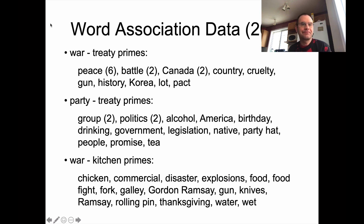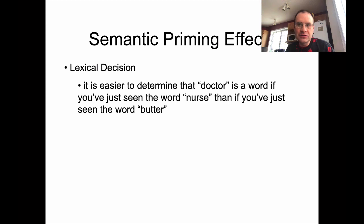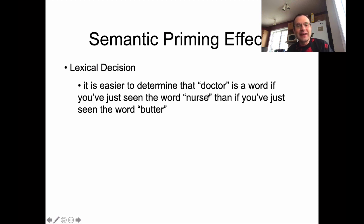Semantic priming can be studied in the lab using a lexical decision task. I plop a sequence of letters in front of you and you have to tell me whether it's a word or not. For instance, if you see 'doctor' you say yes, that's a word; if it was 'docdob' you say no. The funny thing is, if I show you 'doctor' and you've just seen the word 'nurse,' you can make that decision more accurately and more quickly than if you've just seen the word 'butter,' which isn't related to doctor in any obvious semantic way. You could also do this for word naming — if I have you read the word aloud, you can say 'doctor' more quickly after seeing 'nurse' than after seeing 'butter.'